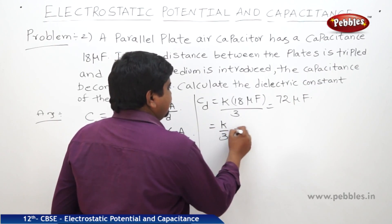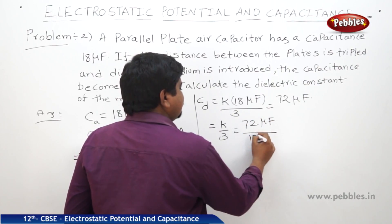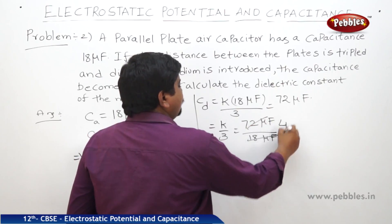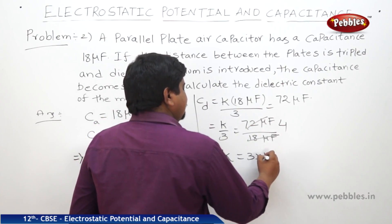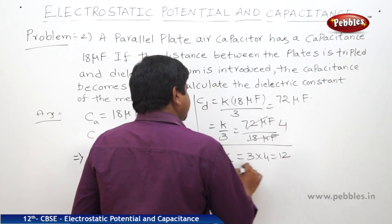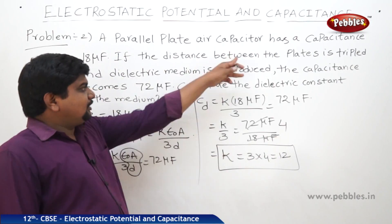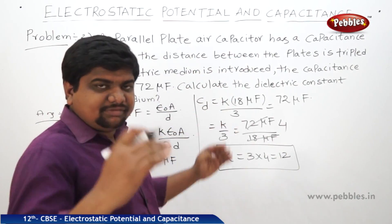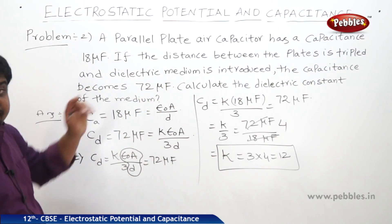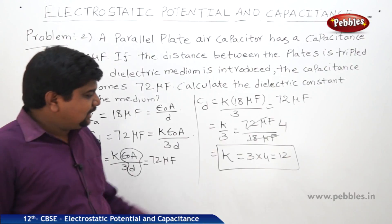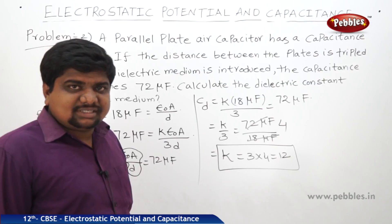So k divided by 3 equals 72 microfarads divided by 18 microfarads, which equals 4. Therefore k equals 3 times 4, which equals 12. The dielectric constant of the medium is 12. In this case, when the gap between the plates is tripled and a dielectric medium is introduced causing the capacitance to become 72 microfarads, the corresponding k value is 12. As mentioned, k is a unitless and dimensionless quantity.